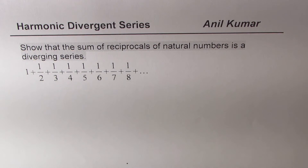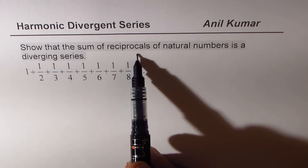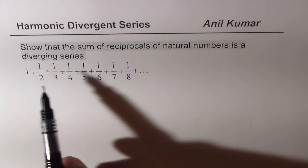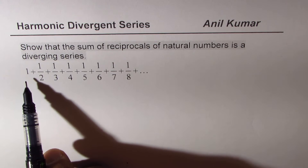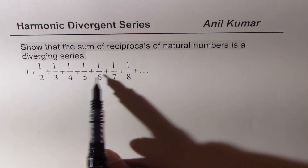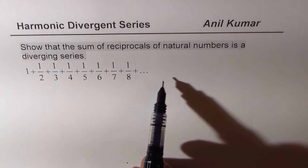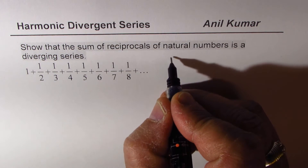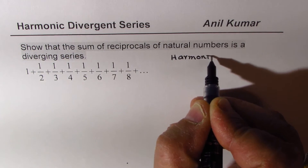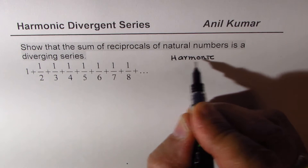I'm Anil Kumar sharing with you some important concepts about harmonic series. In our example we need to show that the sum of reciprocals of natural numbers is a diverging series. The series given to us has reciprocal of one as one over one, and then reciprocals of two, three, four, five, six, seven, eight and so on. In harmonic series, if you take reciprocals, the terms become an arithmetic series.